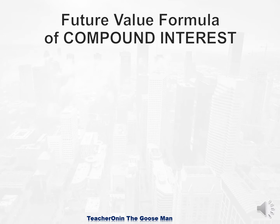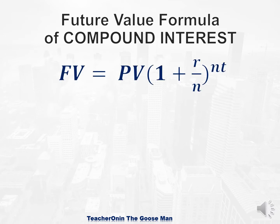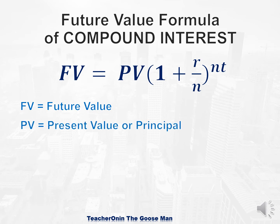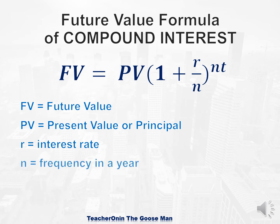Let's have the future value formula of compound interest. We have: future value is equal to present value times 1 plus r over n, raised to nt. FV is the future value, PV is the present value or the principal, R is the interest rate, n is the frequency in a year, and t is the number of years.